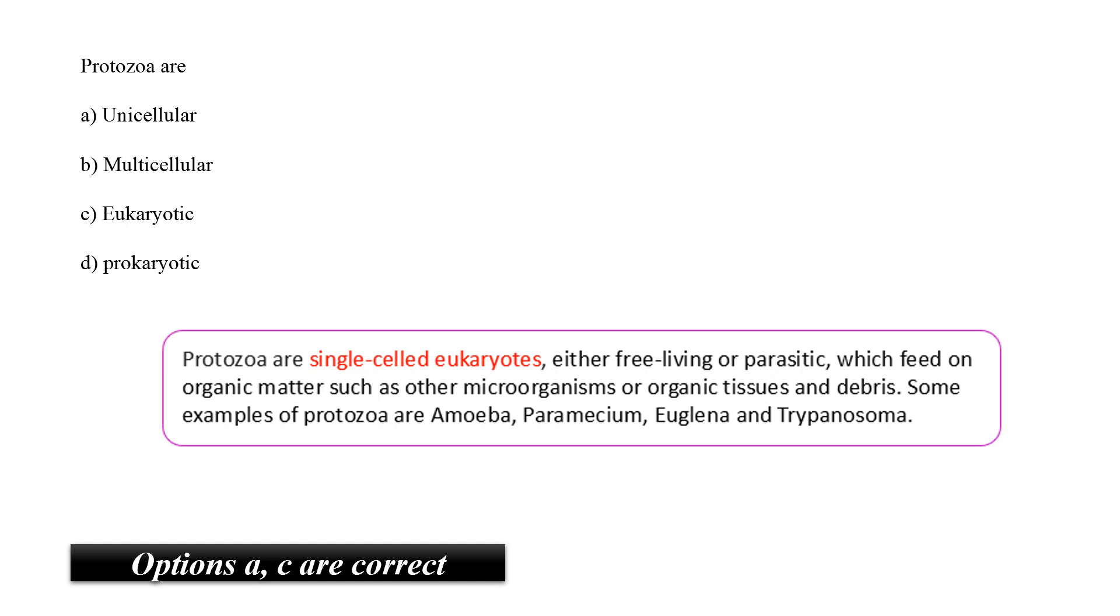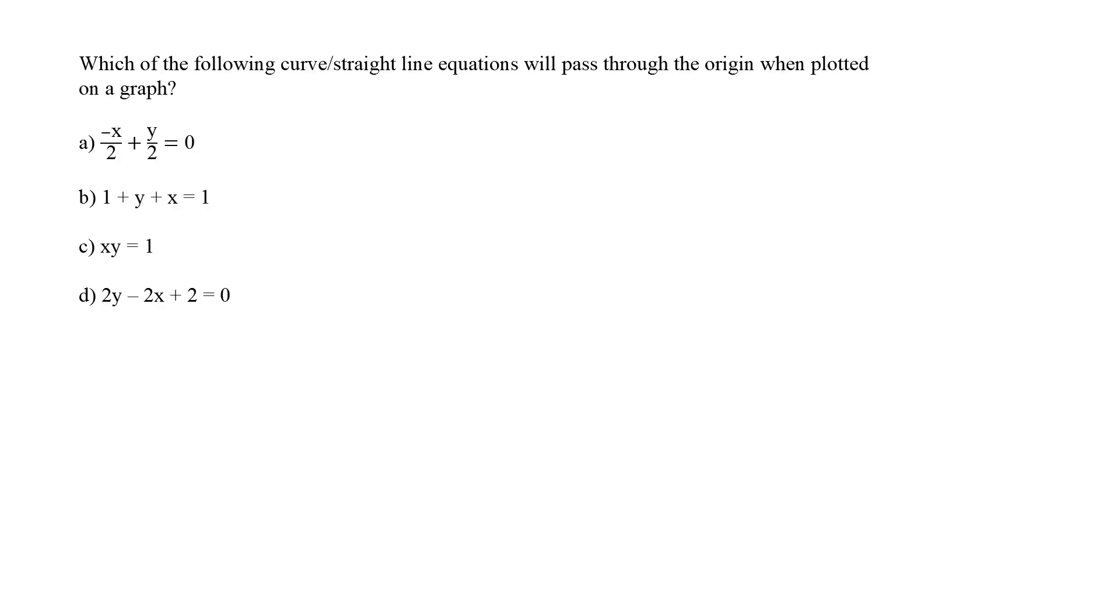Moving on to the next question. Which of the following curve or straight line equations will pass through the origin when plotted on a graph. As you all may know, origin is a point on the graph where the x and the y axis intersect and it is labelled as 0,0. Therefore, to check if an equation passes through that origin, we find if the point 0,0 satisfy the given equation. When we put this point in option A and option B, we find that LHS is equal to RHS or the equation is satisfied. But, in case of option C and D, it is not the case.